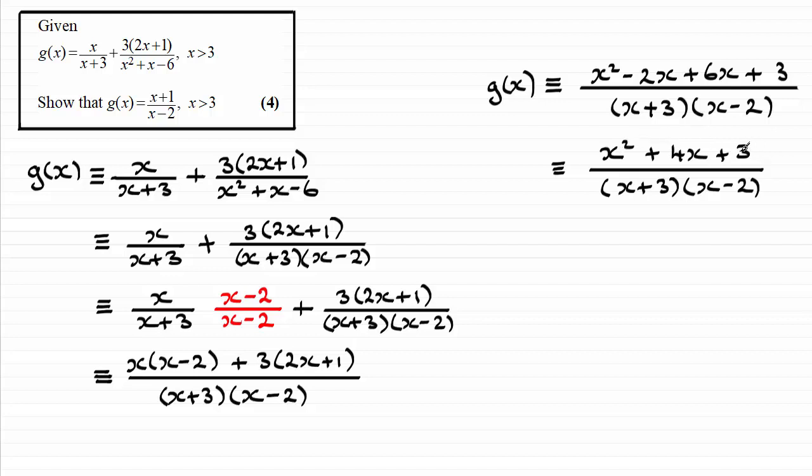And I can factorise the top. Factorising the top gives me x plus 3 times x plus 1. And I can see now that I've got a common factor that is the x plus 3.